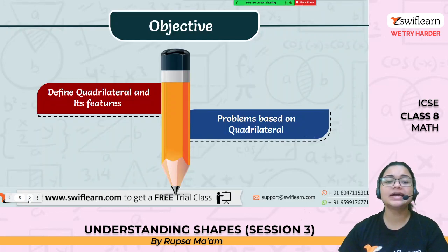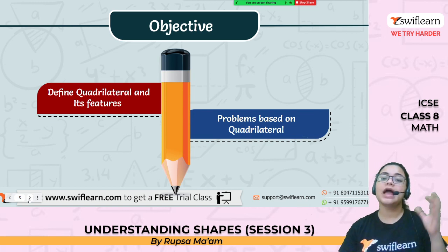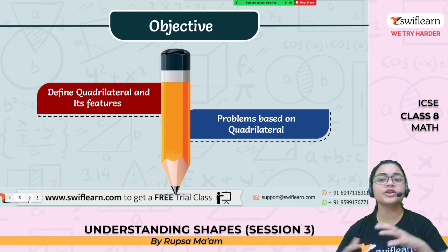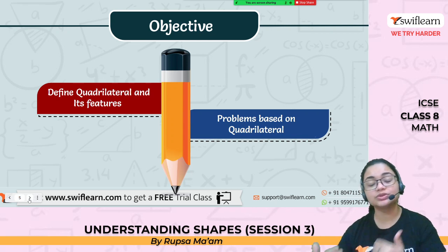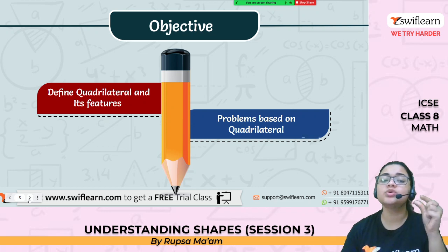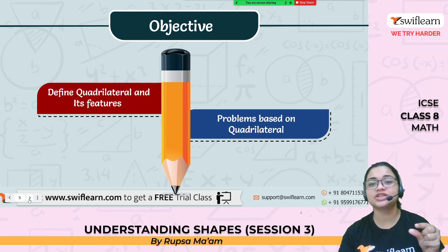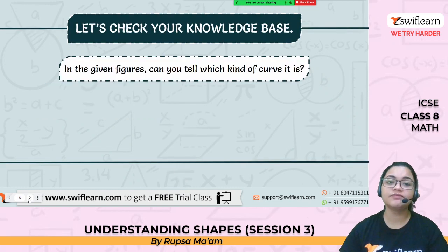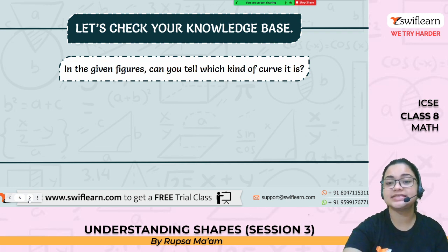So let's start today's session Understanding Shapes session number 3. Today we will learn basically quadrilaterals. In the first class we learned about curves and then we learned different types of shapes, which is 3 side, 4 side, 5 side, pentagon, hexagon, decagon, and how to find angles. Now today we will specifically focus on quadrilaterals, which means shapes with four sides.